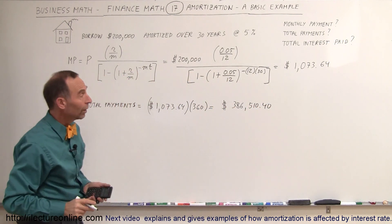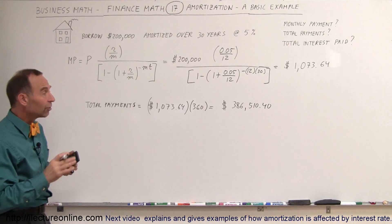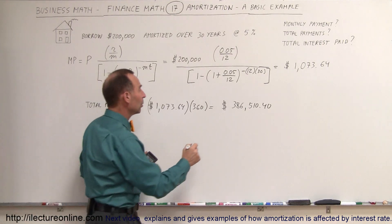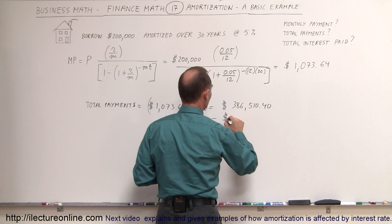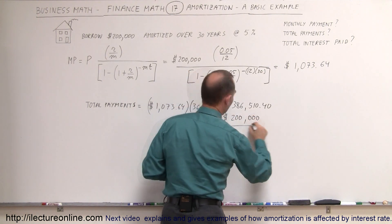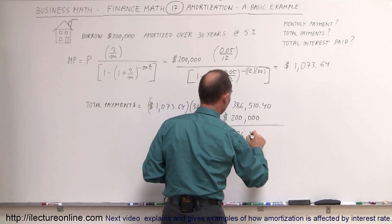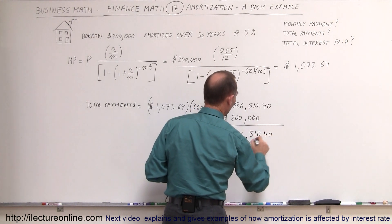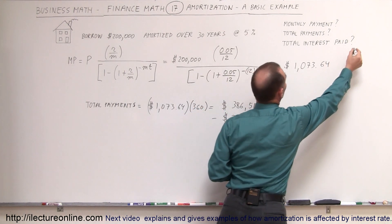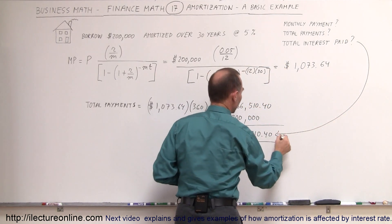All right, well, since $200,000 of that will be the principal paid back to the bank, we then subtract from that the $200,000. And the remainder then will be $186,510.40, which is the total interest paid to the bank.